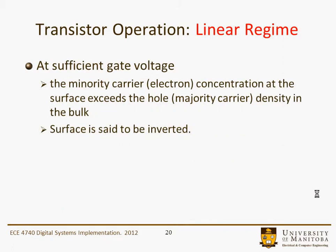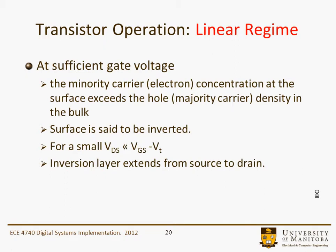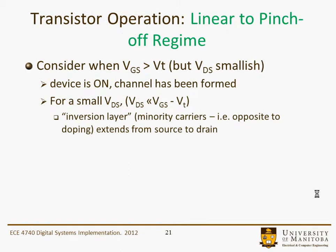At a sufficient gate voltage, the minority carrier — that's the electron concentration at the surface — exceeds the hole majority carrier in the bulk, and the surface is said to be inverted. For small VDS, that is VDS less than VGS minus VT, the inversion layer extends directly from the source to the drain.